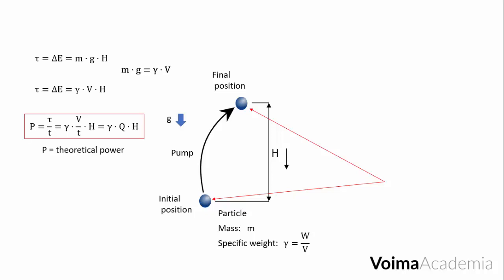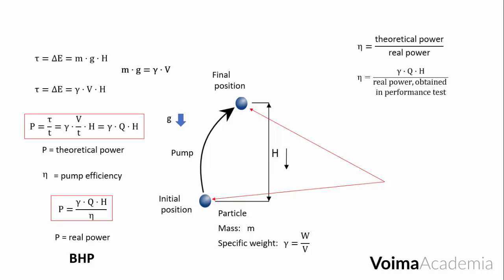Of course, the power that we'll find using this expression will be the theoretical power. To find the real power, we must know the efficiency of the machine that will perform the work. It is a number smaller than one. Note that it divides the theoretical power. So, the real power will be greater than the theoretical power. This will be the power that we must supply to the axis of the pump. It is known as the brake horsepower, or in short, the BHP.